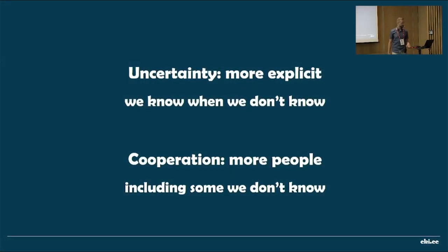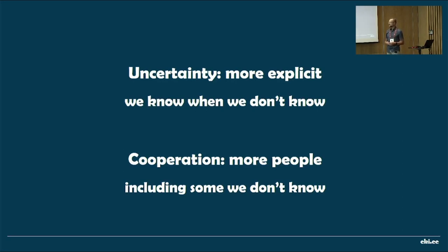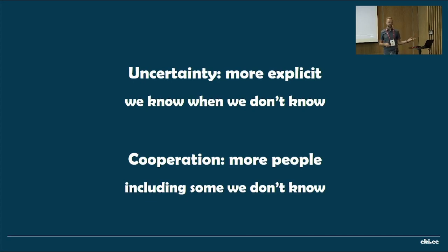In summary: there is uncertainty — there always has been — dictionaries have always been a simplification of the real language world. Only now we are working towards making it more explicit, so that we know where we don't know. It's better to be aware of our limitations. The second problem is that we need to cooperate with many more people than we're used to — perhaps hundreds, many of whom we have never met, some of whom worked long before us, some who will work in the future. But the goal is a better resource in the end.